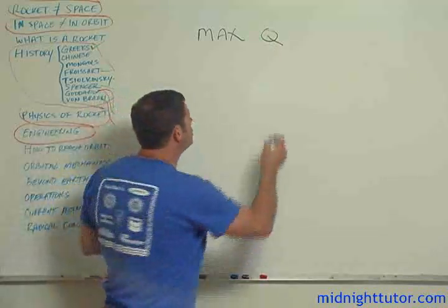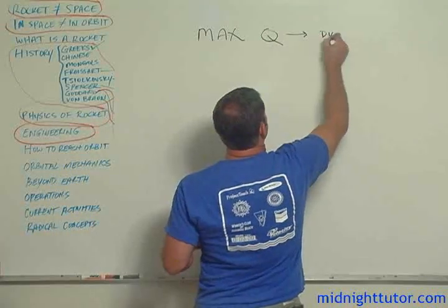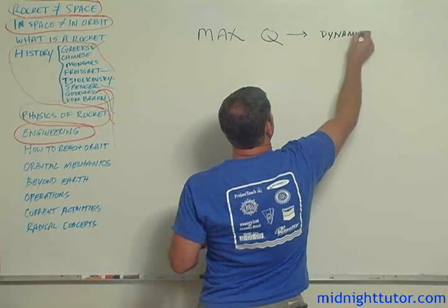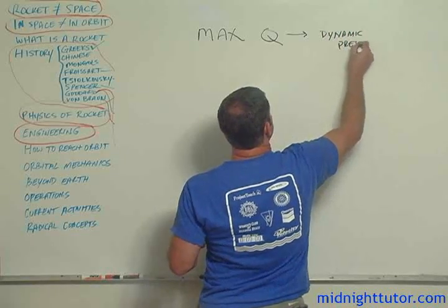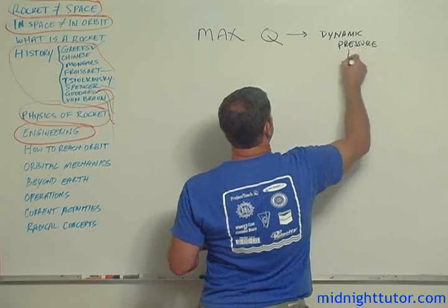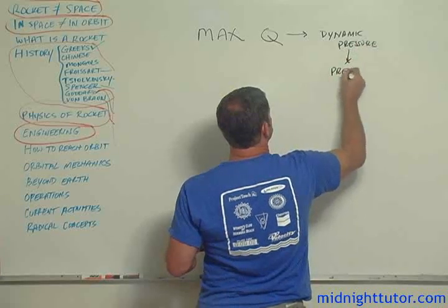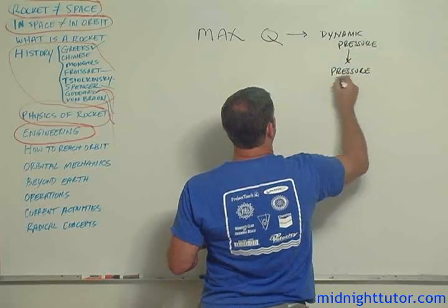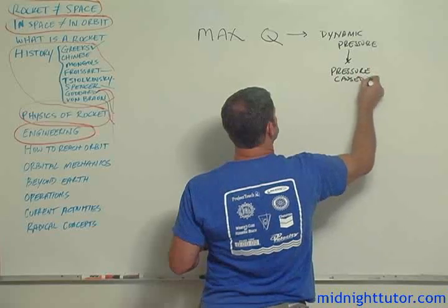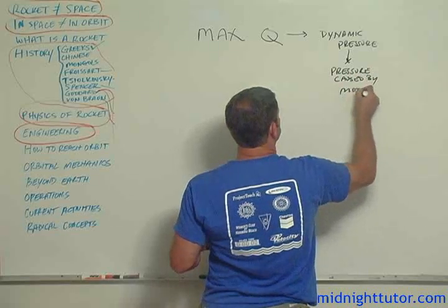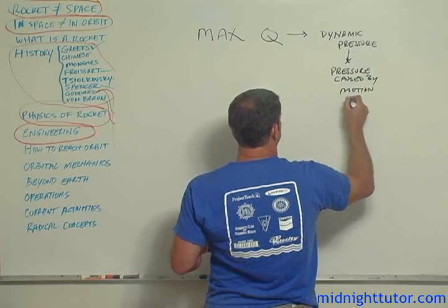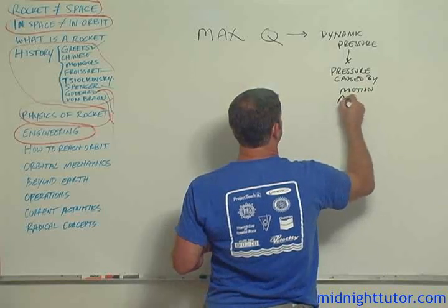Q is the term that's used for dynamic pressure, which is the pressure caused by the motion against the atmosphere.